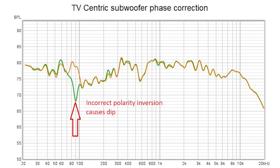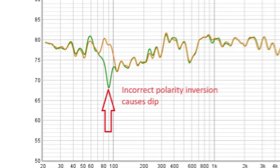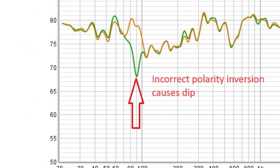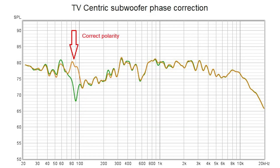You can verify polarities using REW and the invert feature on Device Console. This example shows inverting the subwoofer, which reveals a significant dip around the crossover frequency. The same thing can be done with the main and center speakers to determine if they are subtracting or adding to one another. The polarity is correct when the channel levels are additive.